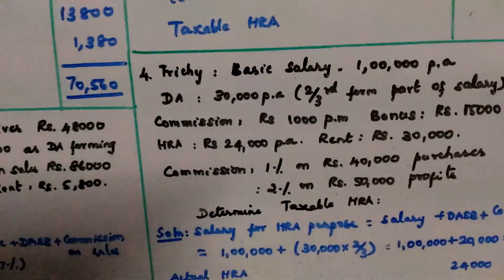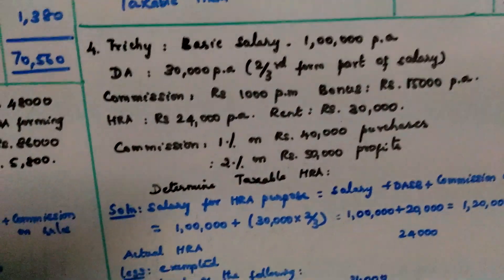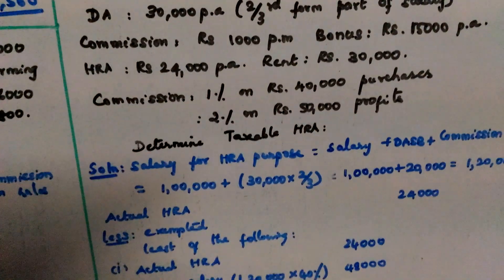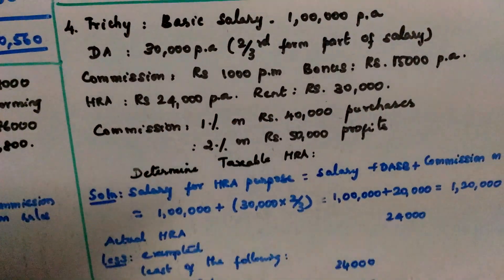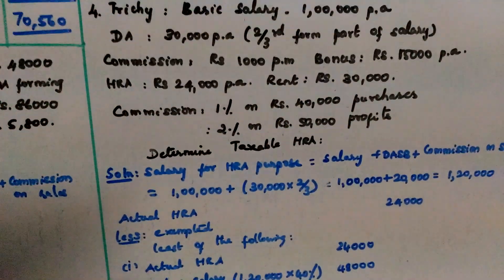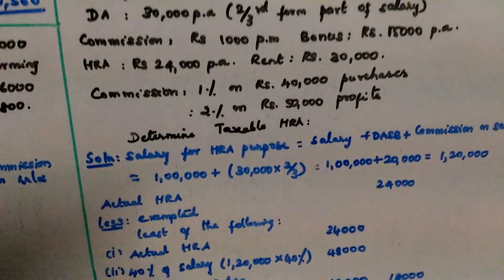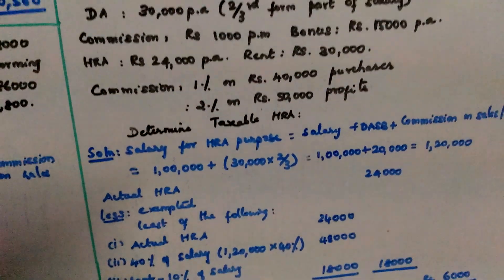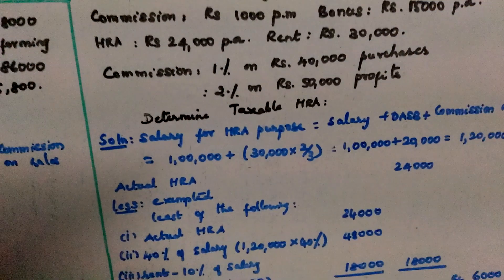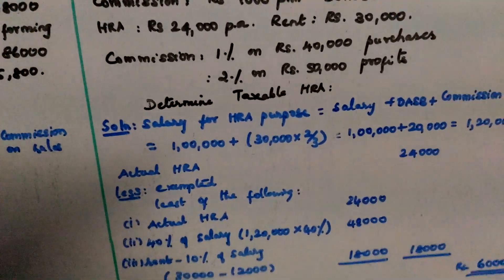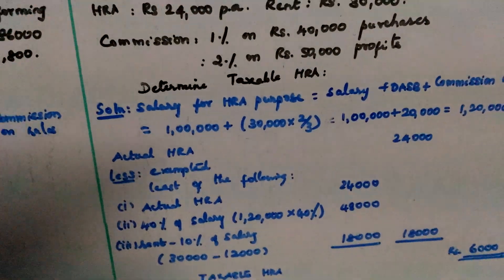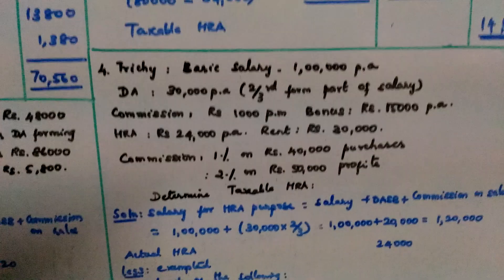Next problem — Trichy (non-metro city). Basic salary is Rs. 1 lakh per annum. DA is Rs. 30,000 per annum, with 2/3 forming part of salary. Fixed commission per month: Bonus is Rs. 50,000 per annum. HRA is Rs. 24,000 per annum. Rent is Rs. 30,000. Commission: 1% on Rs. 40,000 purchases and 2% on Rs. 50,000 profits. Determine taxable HRA.